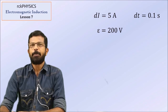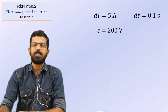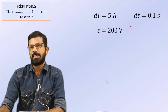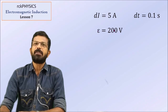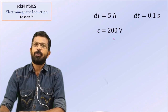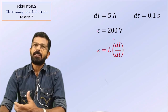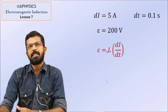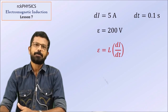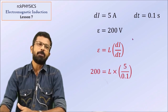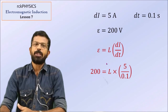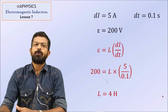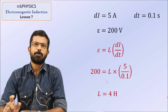Current drops by 5 ampere, so the change in current Di is 5 ampere. Time taken for that, Dt, is 0.1 second. EMF induced E is equal to 200 volt. The induced EMF is equal to L into Di by Dt, where L is the inductance of the coil or circuit. Substituting the values — only L is unknown — the value comes out to be 4 Henry. It is a direct problem.